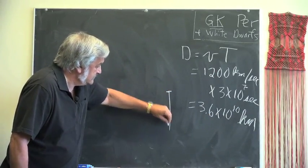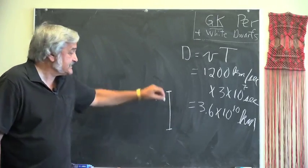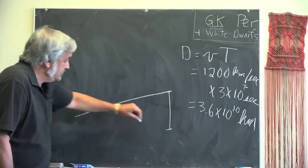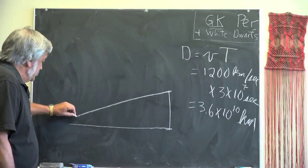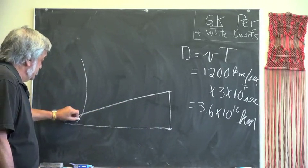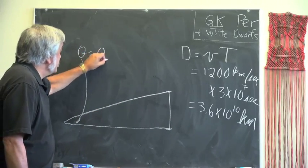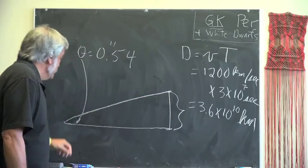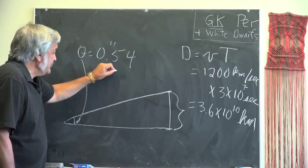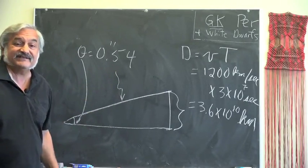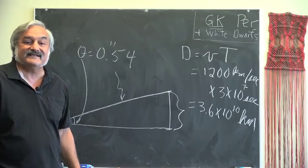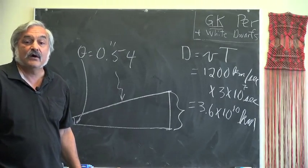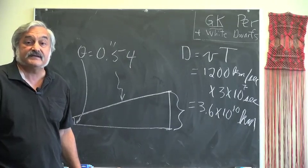This distance, which we can represent just by this little line, is therefore corresponding to an angle theta of 0.54 arc seconds. So we know this distance, we know this angle, and we can calculate through simple trigonometry what the distance is. It turns out to be about 470 parsecs, or about 1,500 light years. Pretty neat, huh?